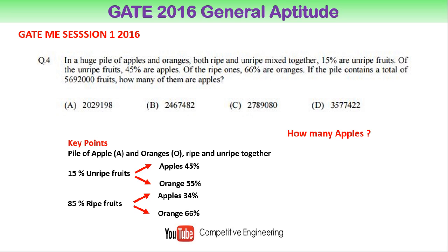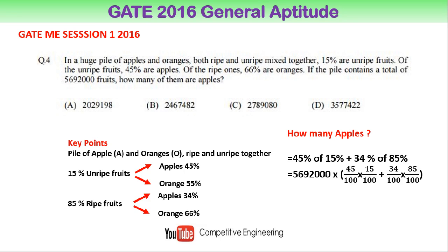The question is how many apples are there in a pile of 56,92,000 fruits. The answer is: 45% of unripe fruits are apples, and 34% of 85% ripe fruits are apples. So we calculate: 56,92,000 × (45/100 × 15/100) + (34/100 × 85/100), which gives 20,29,198 apples. The correct option is option A.